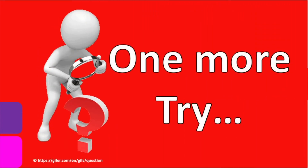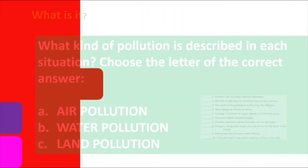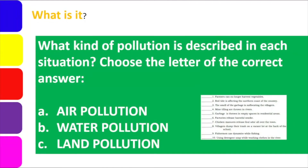One more try — let's do another activity. In this one, titled 'What is it?', it is an identification activity. What kind of pollution is described in each situation? Choose the letter of the correct answer. We have items 1 through 10, but for all of them, the choices are the same: Letter A is air pollution, Letter B is water pollution, and Letter C is land pollution. Are you ready?